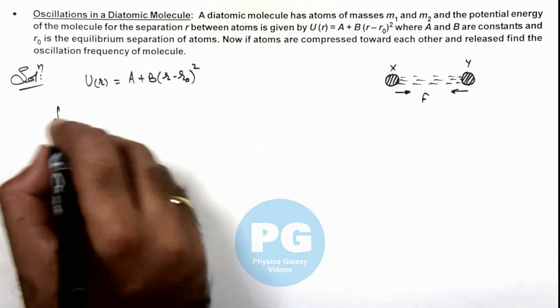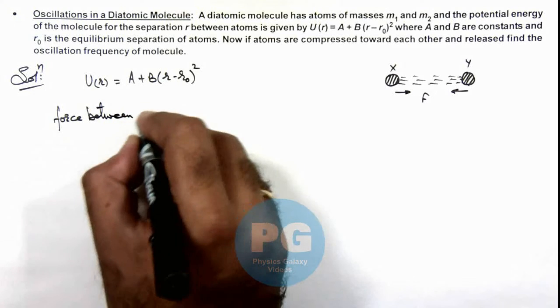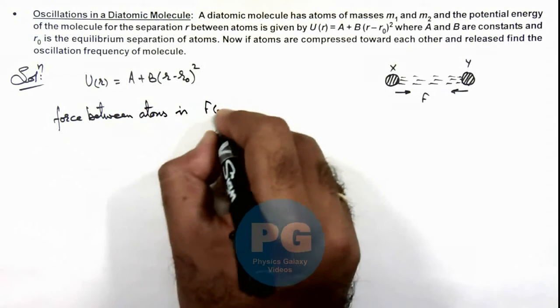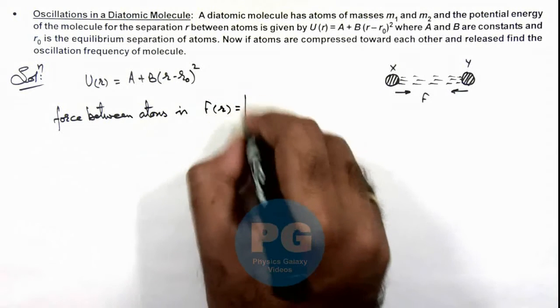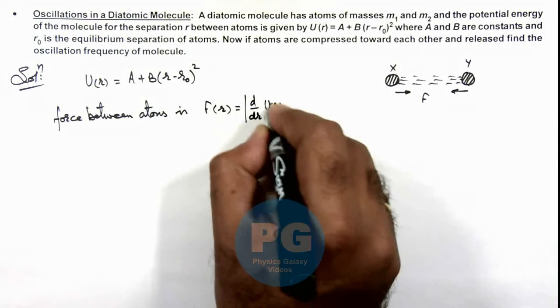So we can directly write force between atoms. This force at separation r we can write as magnitude of d/dr of the potential energy as a function of r.